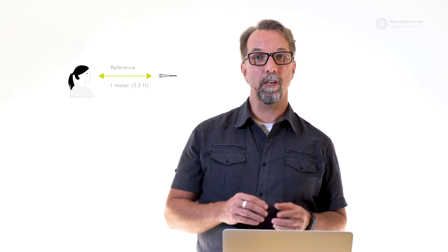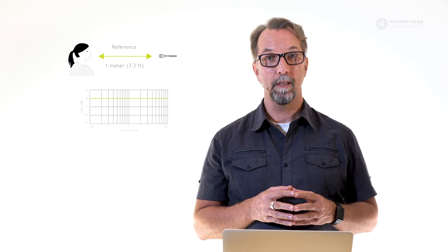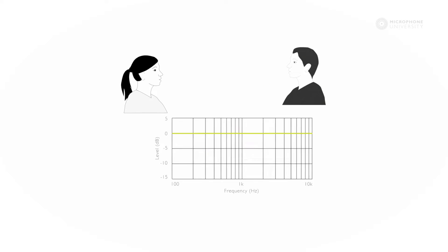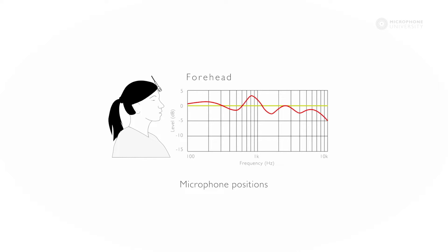In the following, we will hear the differences between the positions on a female singer. We use a common reference at 1 meter as our normal, because 1 meter is the normal distance for a conversation between two people. So, compared to the reference 1 meter away, a placement on the forehead is close to identical. The forehead position sounds like this.